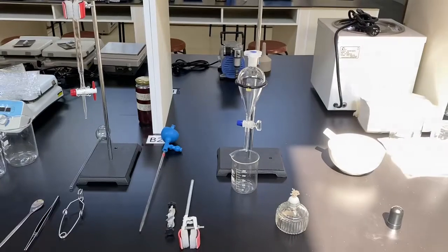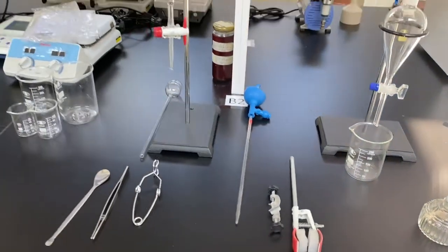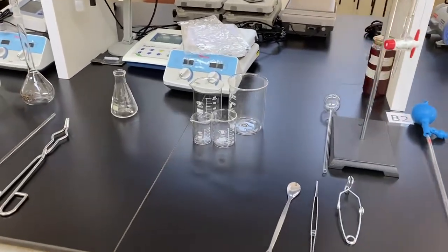Part 1: Glassware. A lot of the materials used in the chemistry laboratory are made of glass. These materials are commonly known as glassware. They are mostly used to contain, measure, or transport substances.